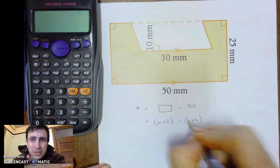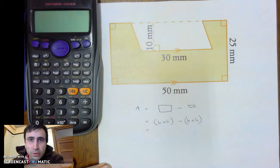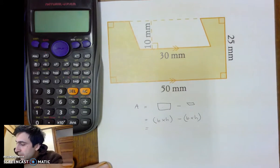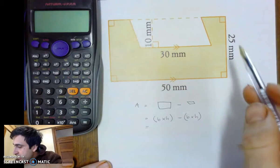And now, again, we just substitute into the formulae. So, let's have a look at a rectangle first. What's the base of the rectangle? Oh, yeah. 50 millimetres.